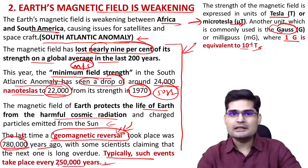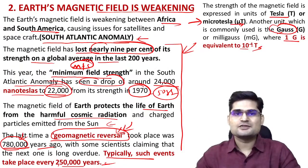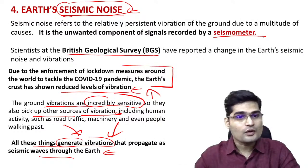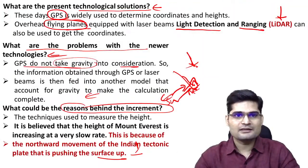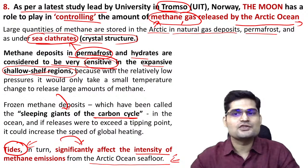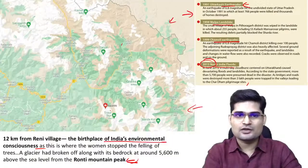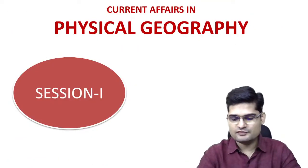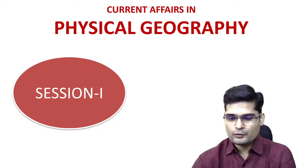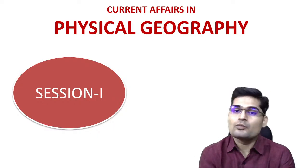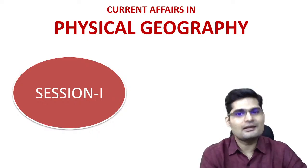That covers today's live session: eight topics including glacial lake outburst floods, snowball effect, Earth's magnetic field, seismic noise, Laschamp Excursion, iceberg A68A, Mount Everest measurement, and sea clathrates and Arctic methane. I hope you've noted these points. The next session will be tomorrow or the day after at 5 PM, covering the next part of physical geography — possibly climate or oceans.